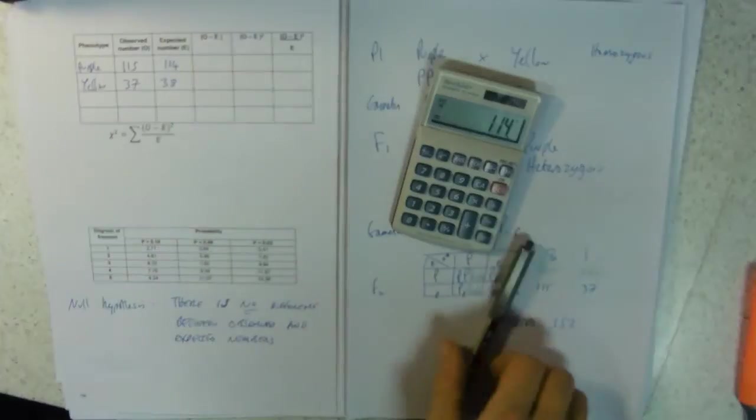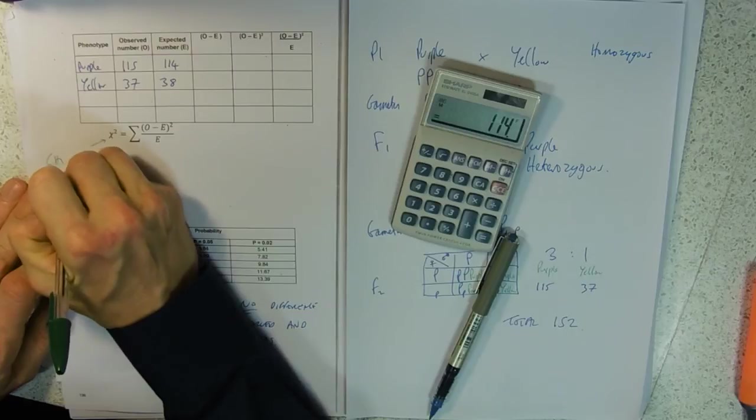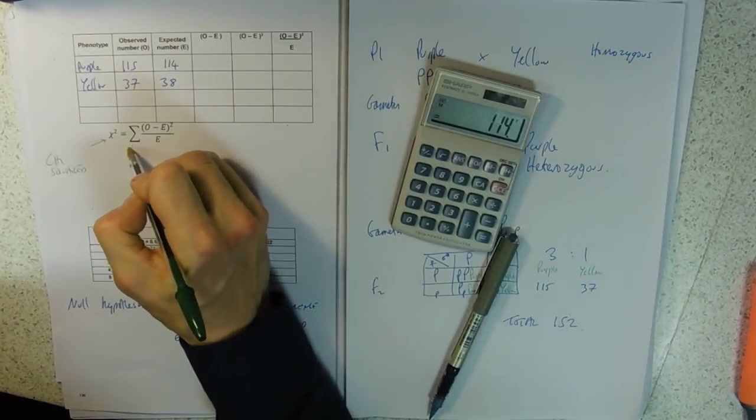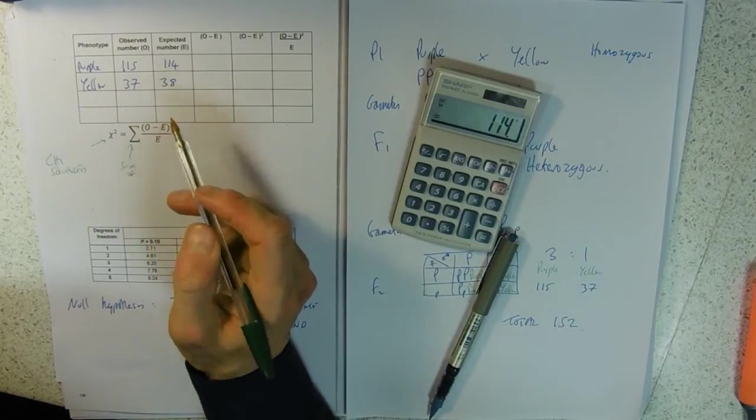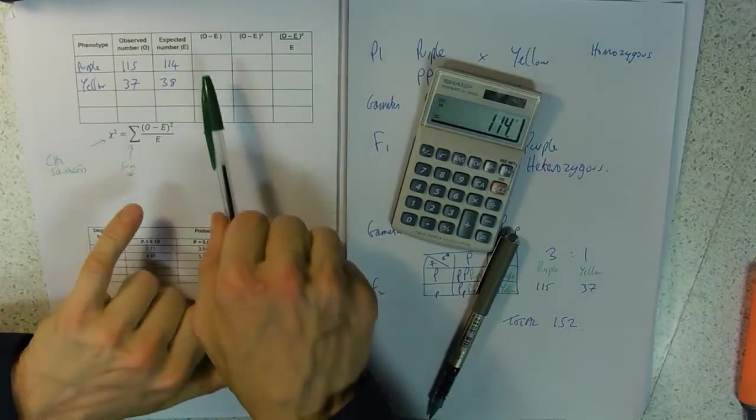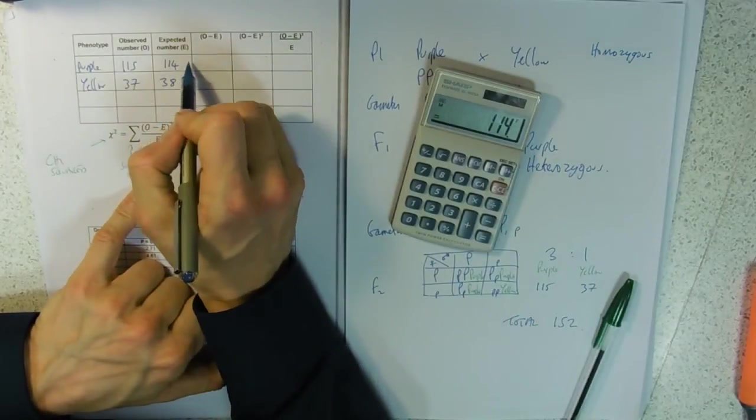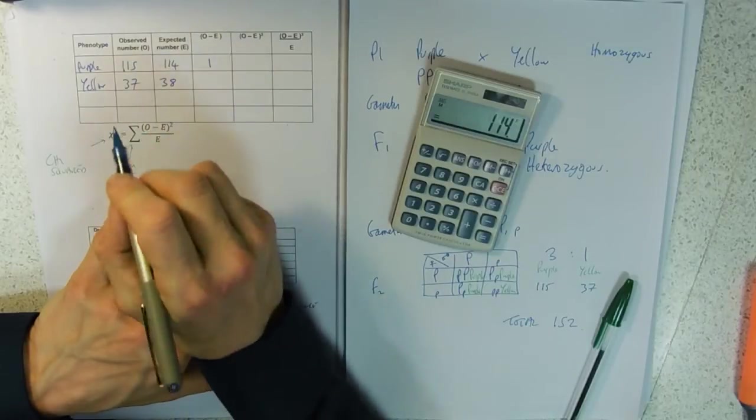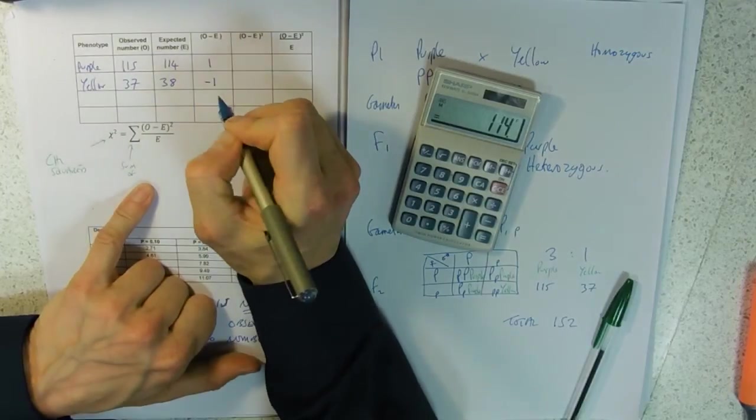Here's our little chi-squared formula. This means sum of, and O's and E's are just our observed and expected. Some of you might be able to do this all at once, but generally we try and put this in a table. O minus E: 115 minus 114 is one, 37 minus 38 is minus one.